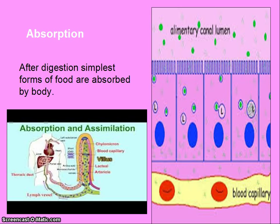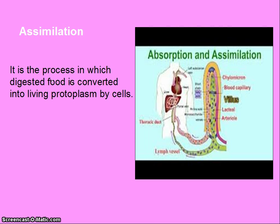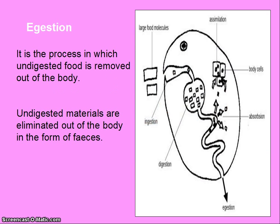After digestion, the digested food material is absorbed into the blood. Assimilation is the process in which digested food is converted into living protoplasm by cells. Egestion is the process in which undigested food is removed out of the body — undigested materials are eliminated in the form of feces.